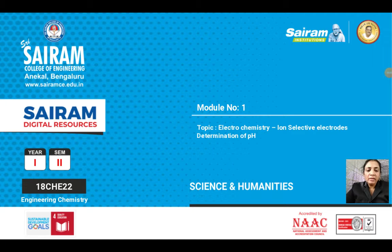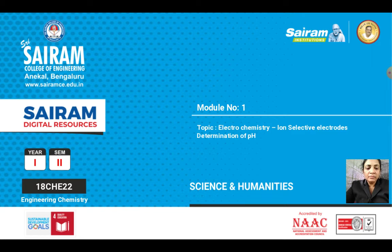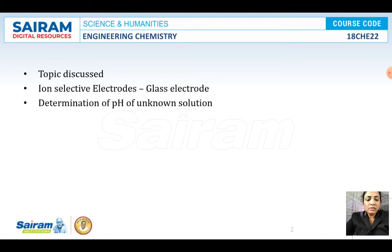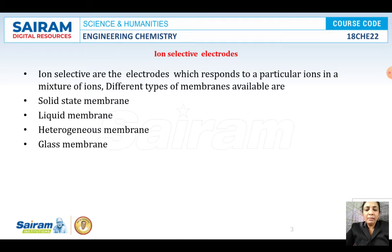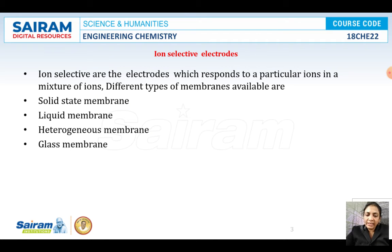Friends, we are in module number 1 and in this session we are going to discuss about ion selective electrodes and the determination of pH by using the ion selective electrode, that is the glass electrode. Ion selective electrodes are the electrodes which respond to a particular ion in a mixture of ions — these electrodes respond to a particular ion only in the presence of different ions.